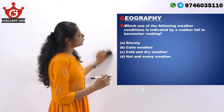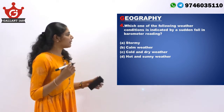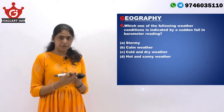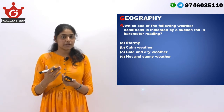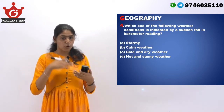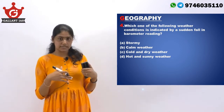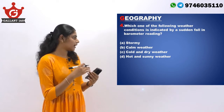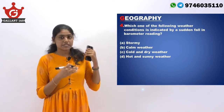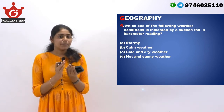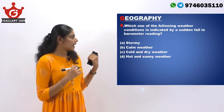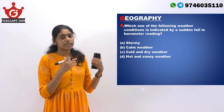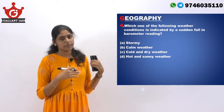The next question is from geography. Which one of the following weather conditions is indicated by a sudden fall in barometer reading? A barometer is an instrument which measures variation in atmospheric pressure. When there is an increase in atmospheric pressure, the reading increases; when there is a fall in atmospheric pressure, the barometer reading decreases. Here it is asking about a sudden fall. Among the options — stormy, calm weather, cold and dry, and hot and sunny — stormy weather has very rapid variations in air pressure, causing the barometer reading to show a very sudden fall. So the answer is option A, stormy weather.